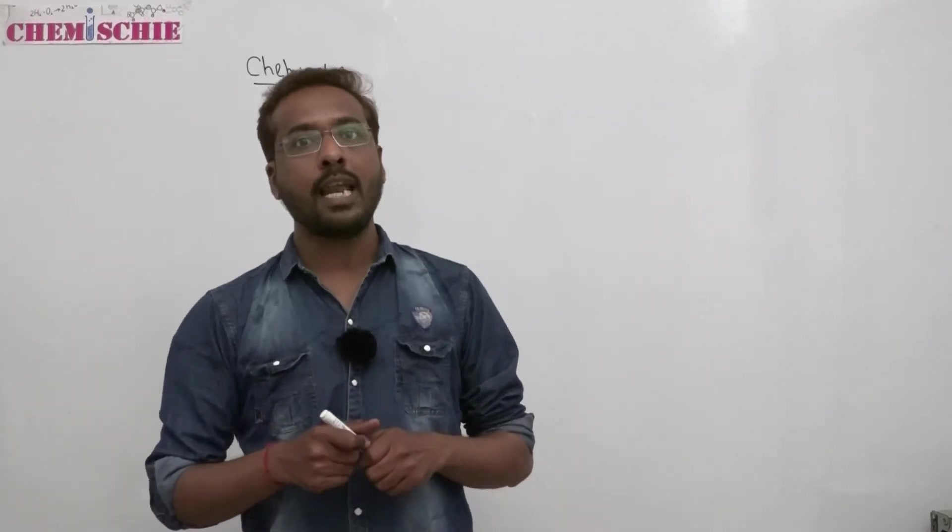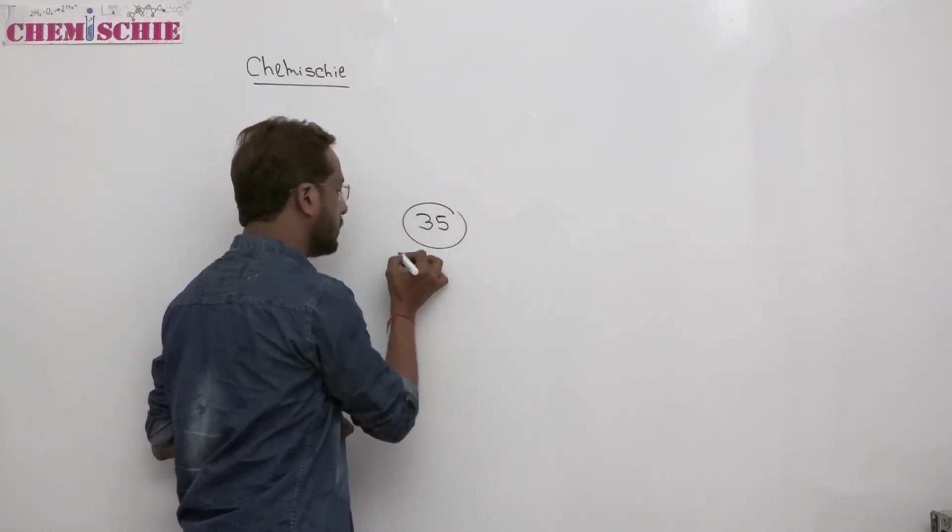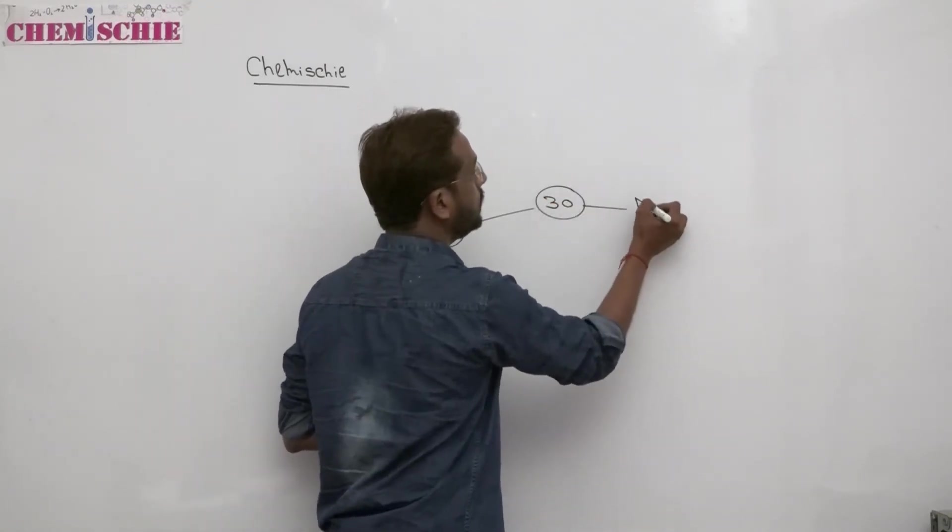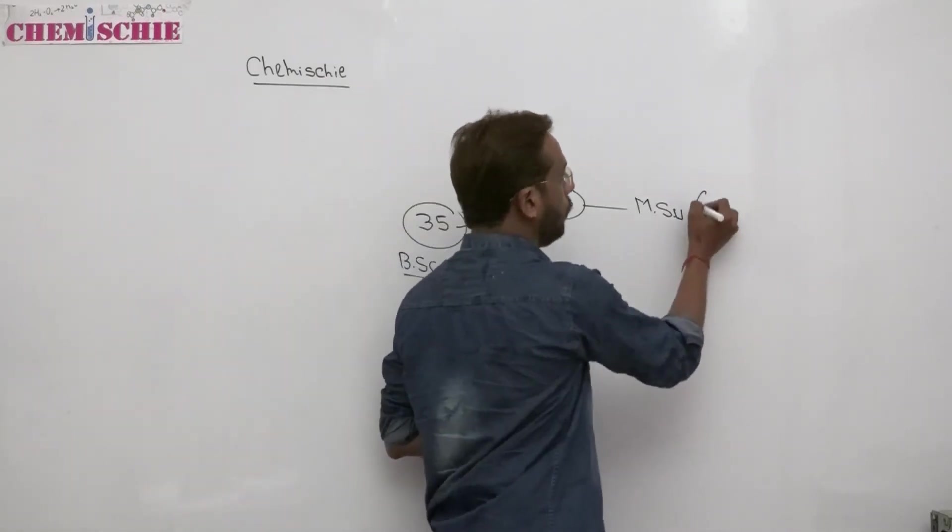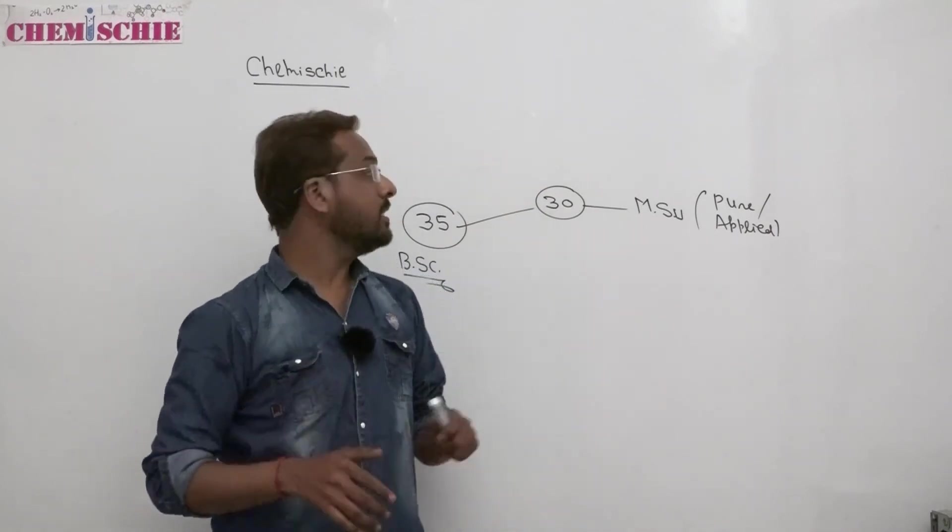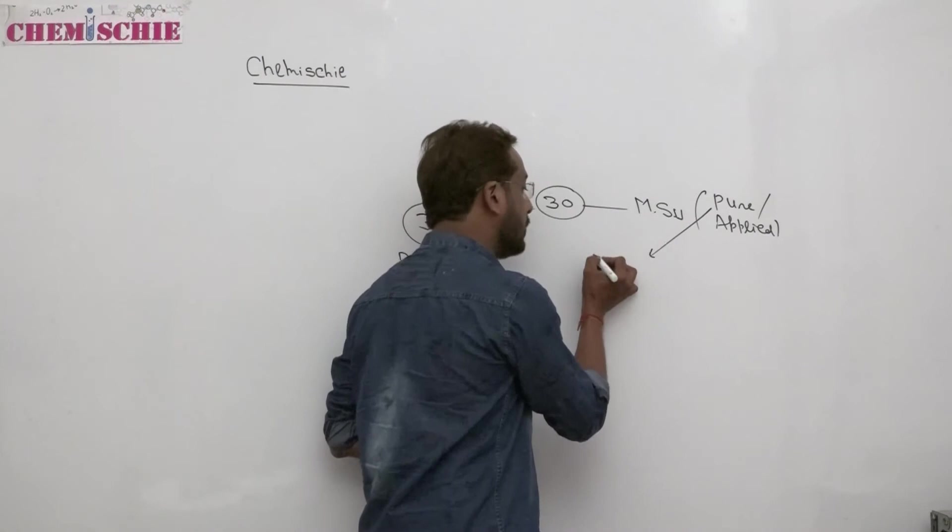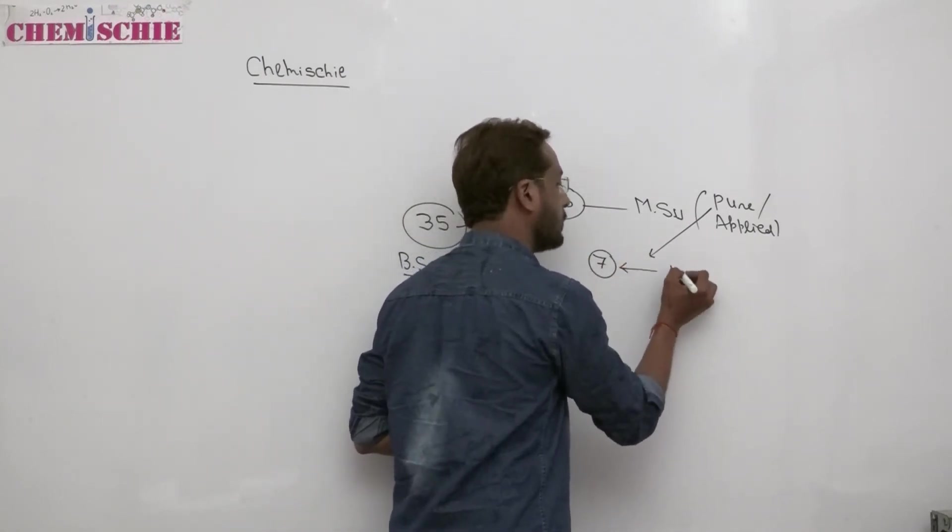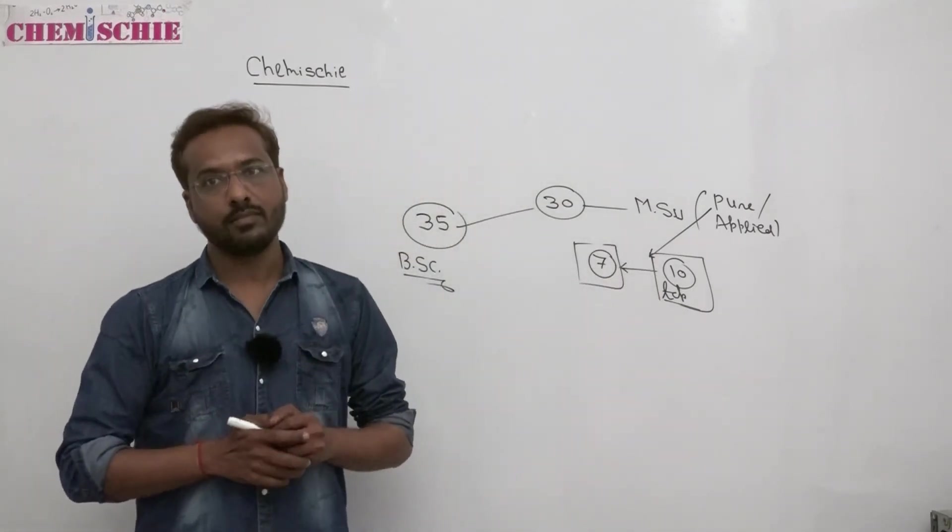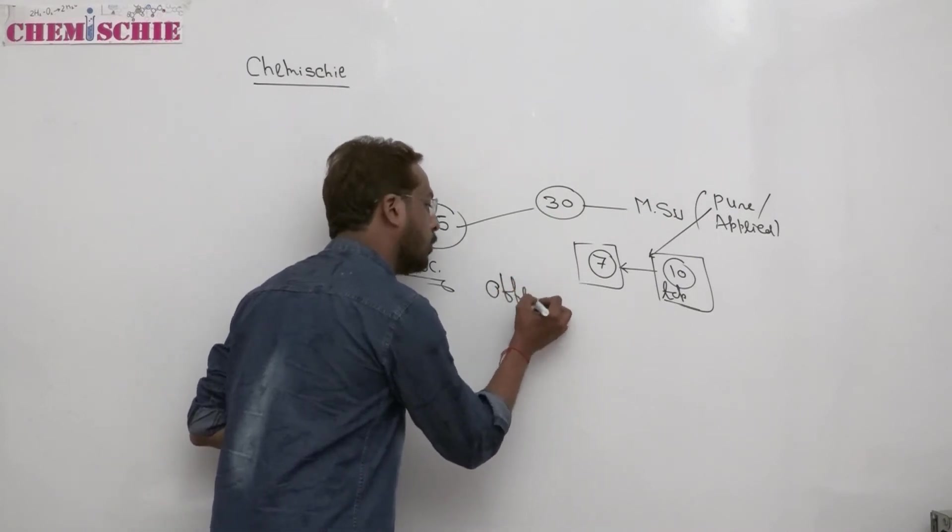If we talk about last year, in our offline coaching, we had 35 students coming for coaching. 35 BSC students came for coaching. Out of 35, 30 students were selected in MSC, both pure as well as applied chemistry. If we talk about pure, 7 students are selected out of the top 10. In top 10, seven are from Chemistry Academy. Last time our coaching was offline coaching.